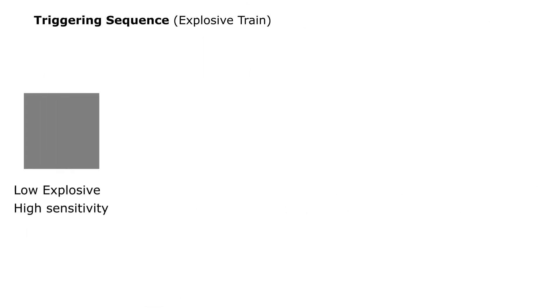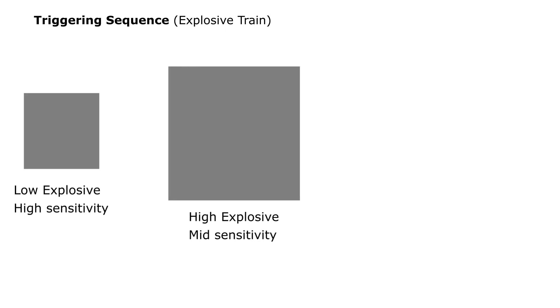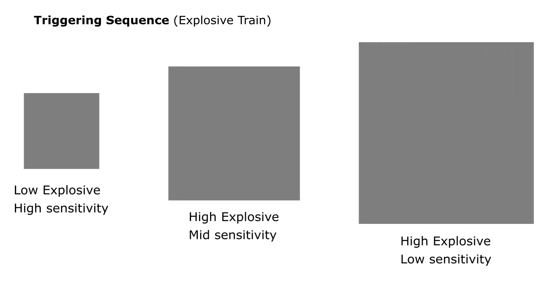This sequence of events may seem overly complicated and you may wonder why the high-density explosive is not detonated directly. The main reasons are safety, reliability, and accuracy. The high-density explosive is made less sensitive to prevent it from exploding due to forces encountered during the mission.